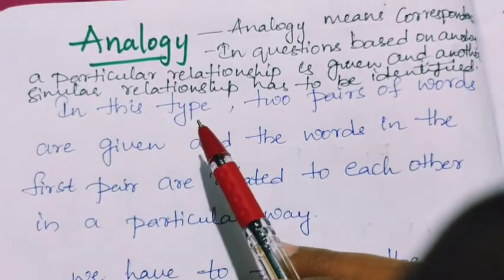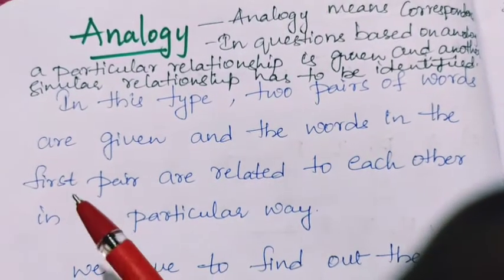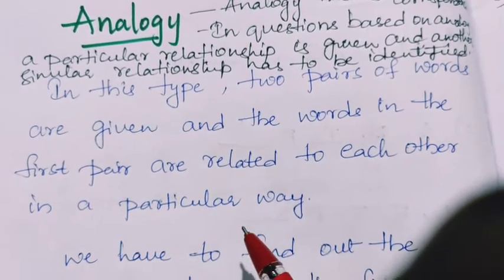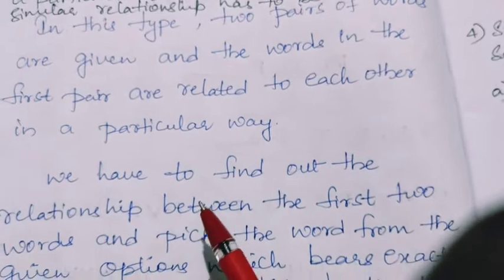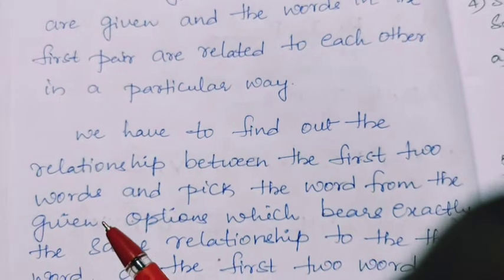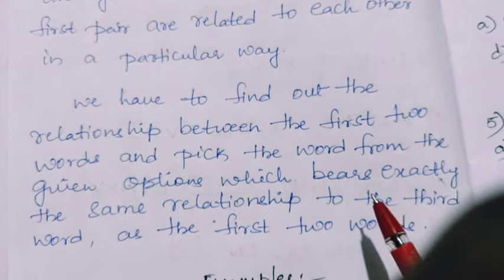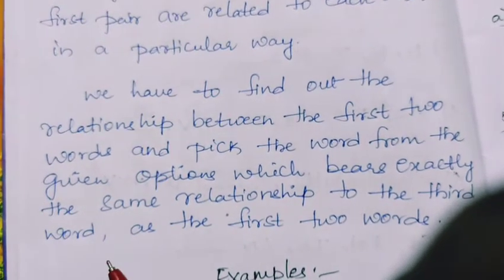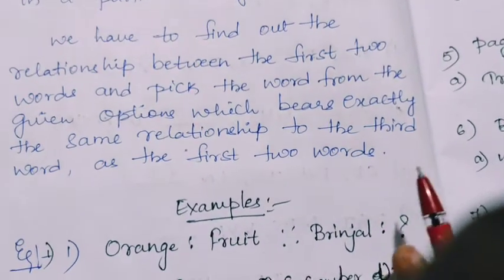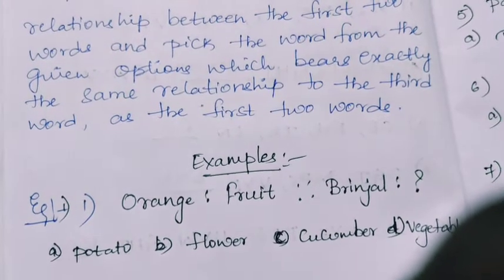For example, in this type of question, two pairs of words are given and the words in the first pair are related to each other in a particular way. We have to find out or identify the relationship between the first two words and pick the word from the given options which bears exactly the same relationship to the third word as the first two words. When you look at the examples, you will know how to relate the two words, how there is correspondence between the words.